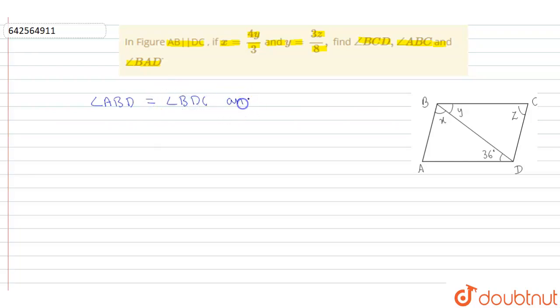Okay, and angle CBD is equal to angle ADB. Okay, it is due to alternate interior angles.